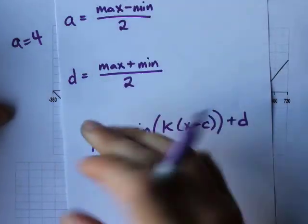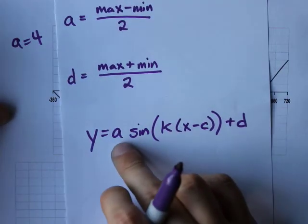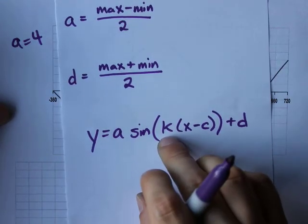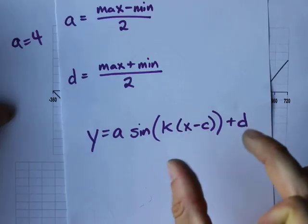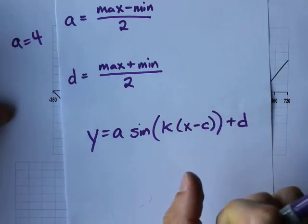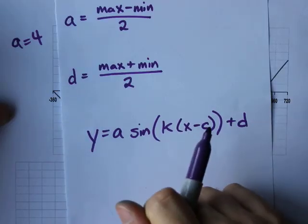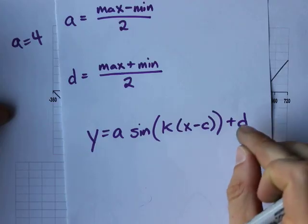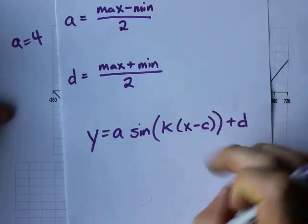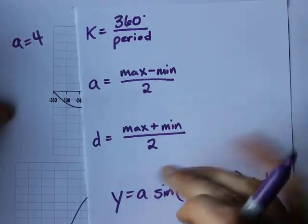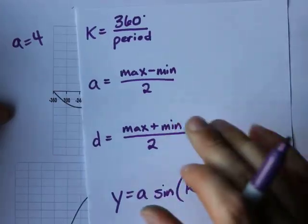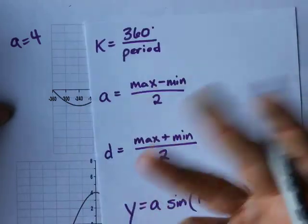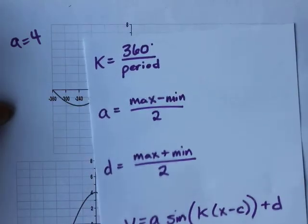I should note that all the letters I'm using here: A for amplitude, K for a horizontal stretch or compression, C for a horizontal or phase shift, and D for a vertical shift. These are the letters we use in Canada. The formulas are the same no matter what.